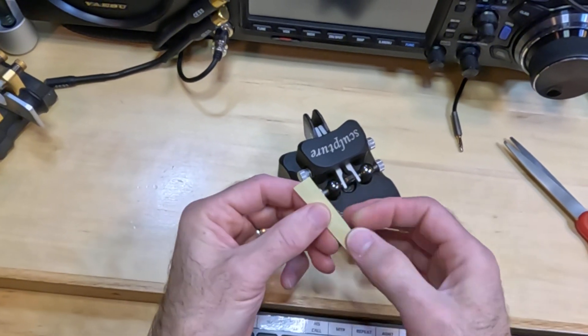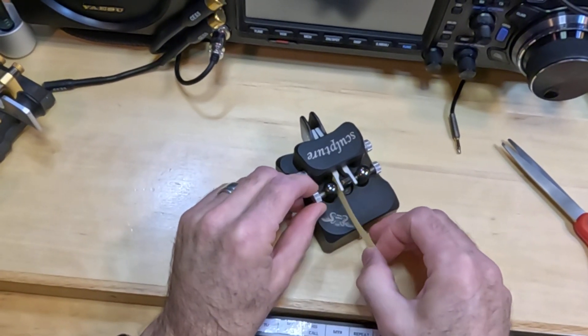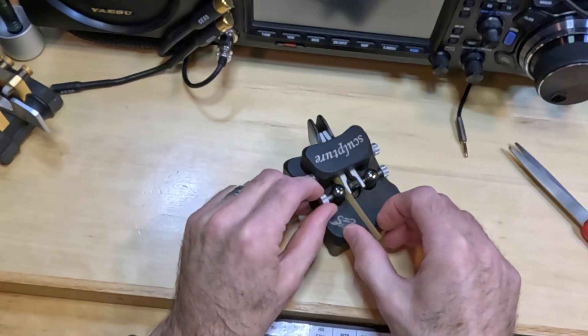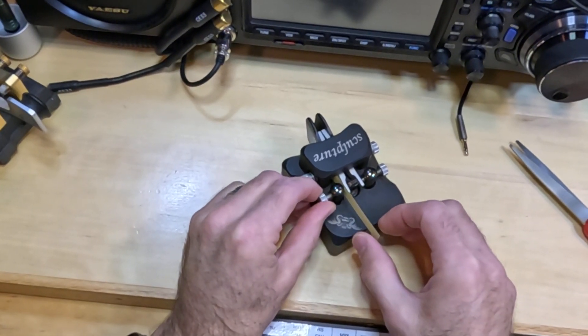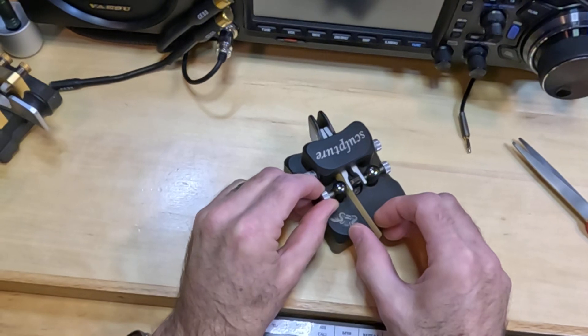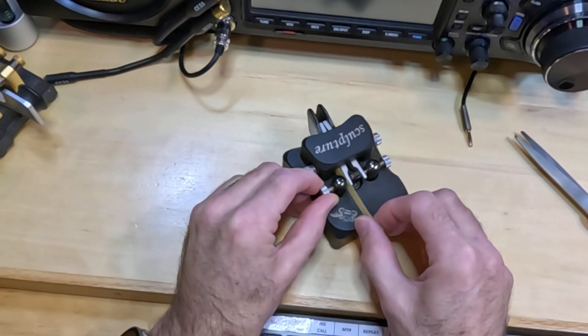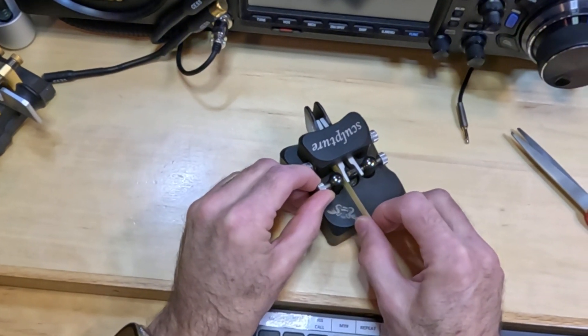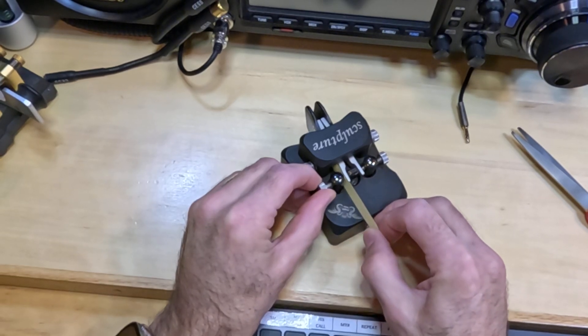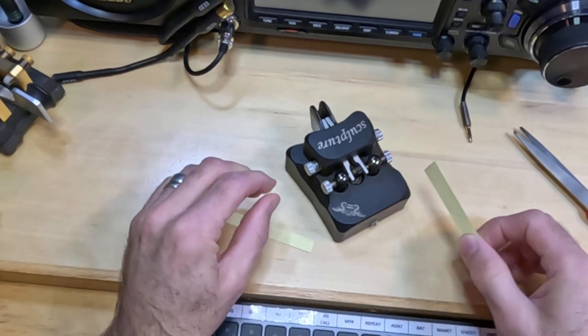A lot of times you'll see some discoloration of the paper where it's removing any dirt or tarnish. I guess tarnish doesn't happen with the Begali keys because they are gold, but the contacts do get dirty and it's important to keep them clean.